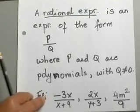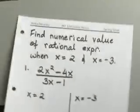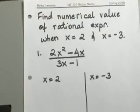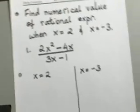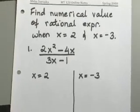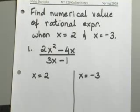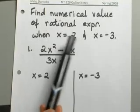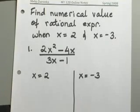Now the first thing that I want to talk about in respect to rational expressions is just, let's see what a numerical value of a rational expression would look like. So let's say we have this expression here, 2X squared minus 4X over 3X minus 1, and we are trying to evaluate this expression at X equals 2 and X equals negative 3.